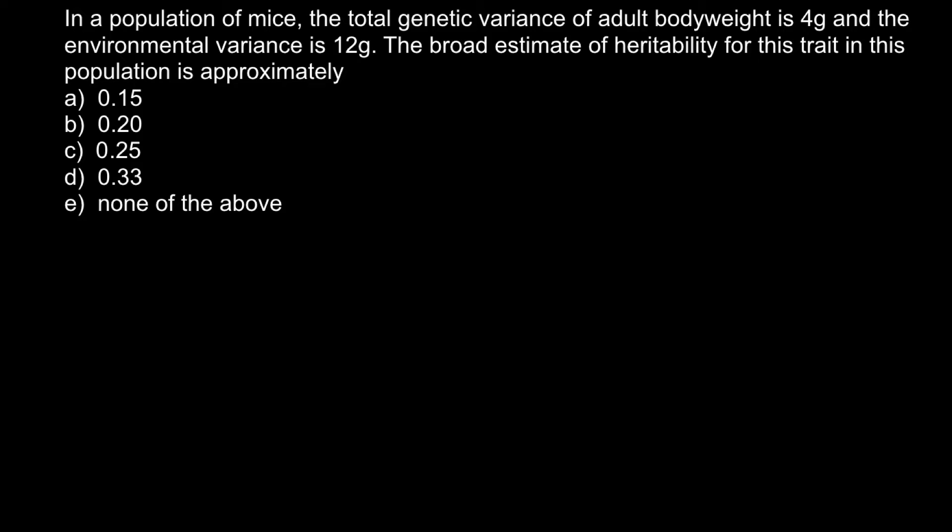So this problem is very easy. In order to solve this problem, everything you have to know is just two formulas. The first one would be: variance total phenotypic equals variance genetic plus variance environmental. This is very easy to understand.